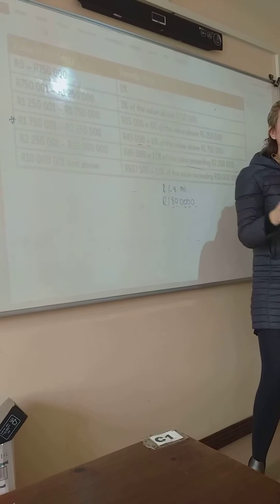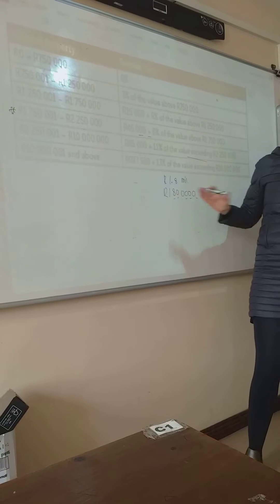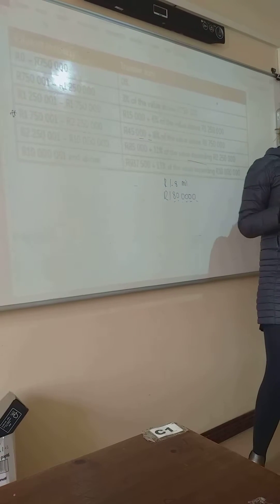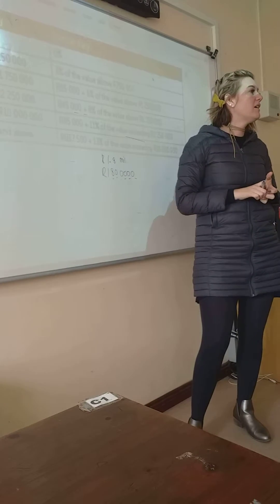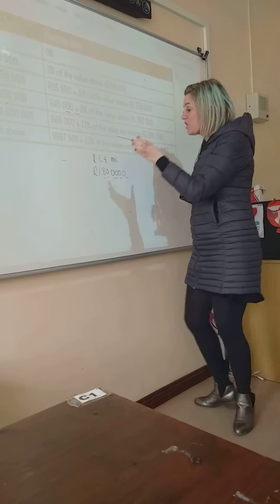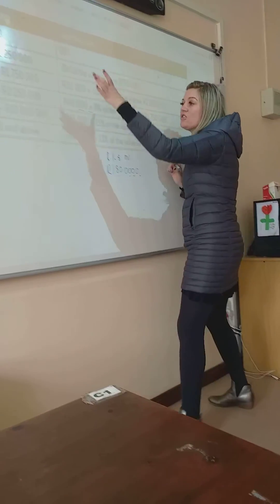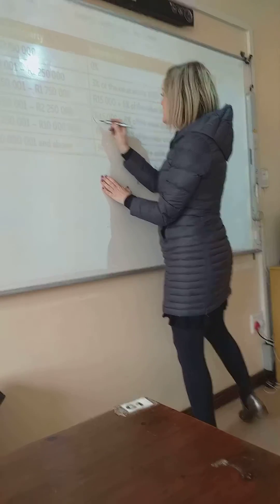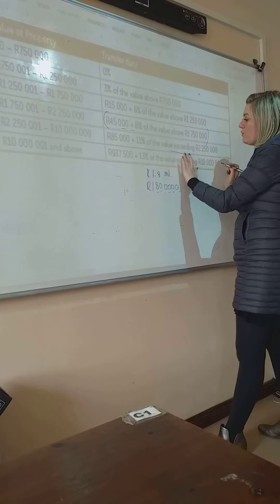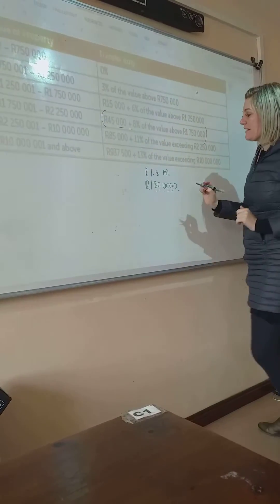So you're not going to work annually and multiply the salary like you did and multiply it by 12. But are you with me? So you're just going to take the property value and choose your row. So you're going to use this little formula. Are you all with me?